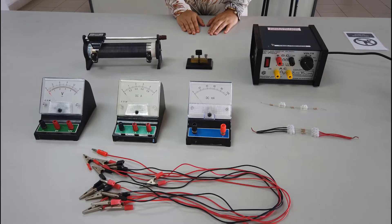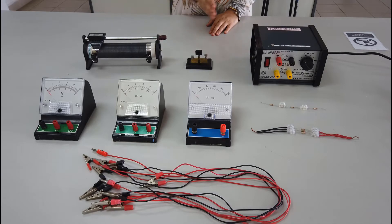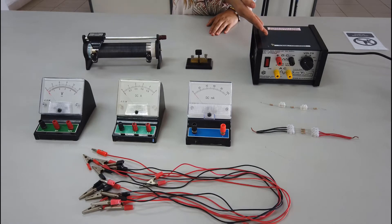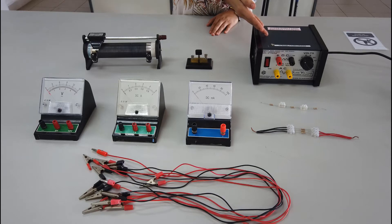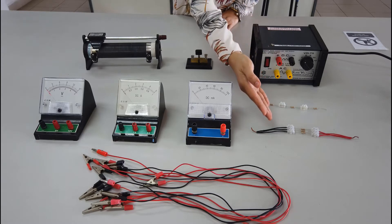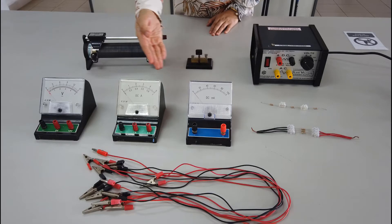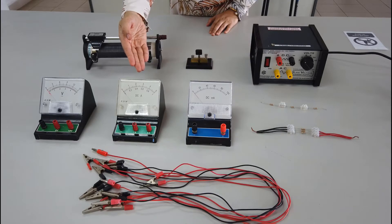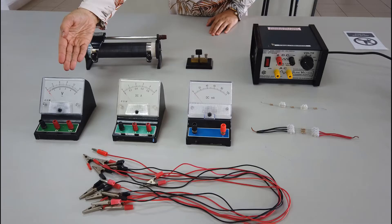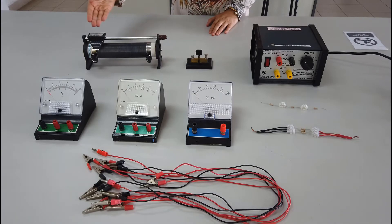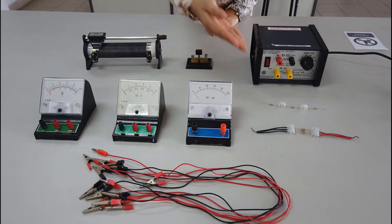The apparatus needed for this experiment are a DC power supply, three resistors of the same resistance, a DC milliammeter, a DC ammeter, a DC voltmeter, a variable resistor, switch, and connecting wires.